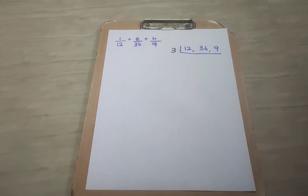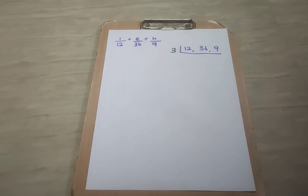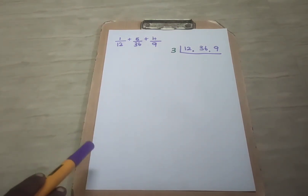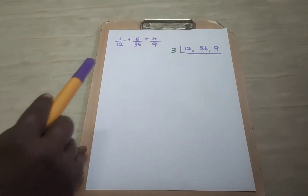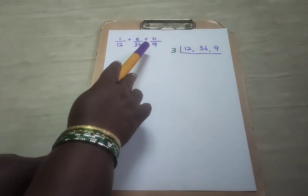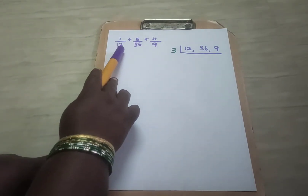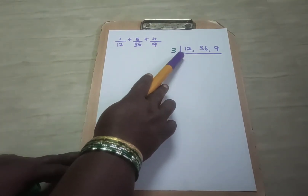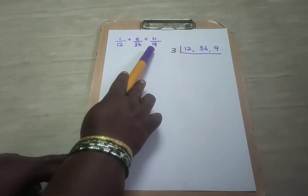Here we are going to find the addition of 3 unlike fractions. The same method we used for 2 unlike fractions we are going to follow for 3 unlike fractions as well. First you have to find the LCM — because the denominators are different, you have to find the LCM for the denominators.